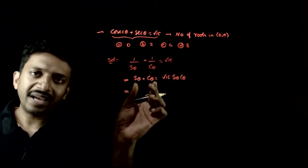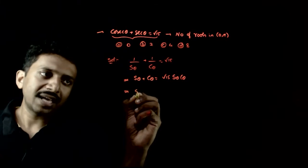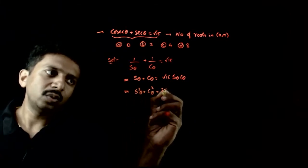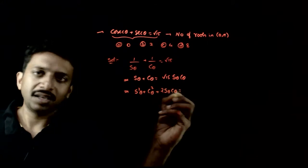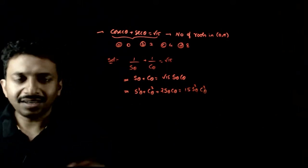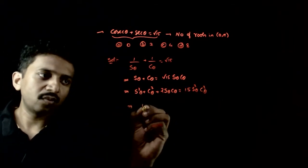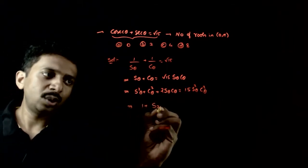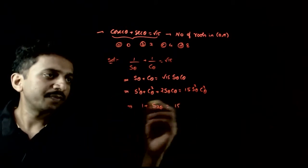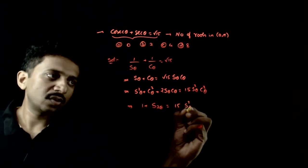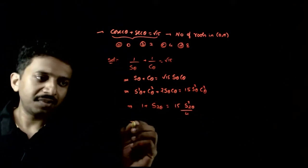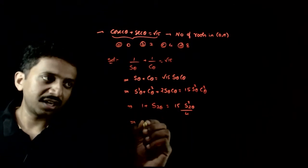I will square both sides. So, sin squared theta plus cos squared theta plus 2 sin theta cos theta equals 15 sin squared theta cos squared theta. This implies 1 plus sin 2 theta equals 15 times sin squared theta cos squared theta, which is sin squared 2 theta by 4. After LCM cross multiplication,